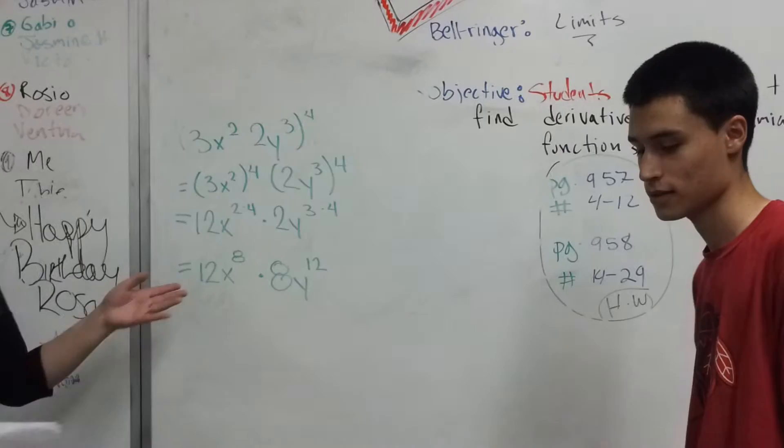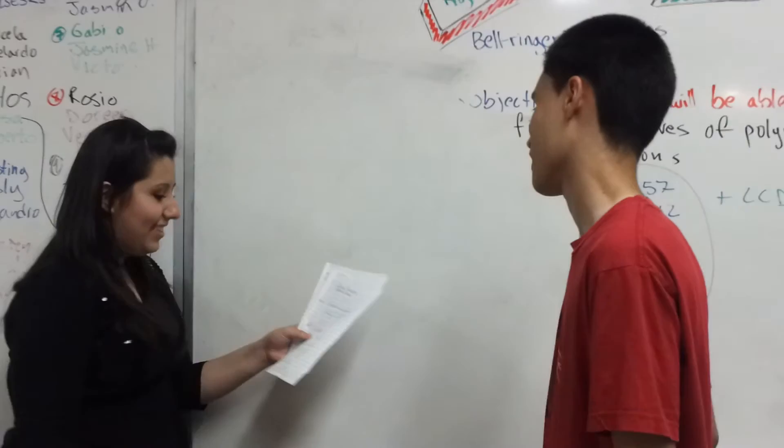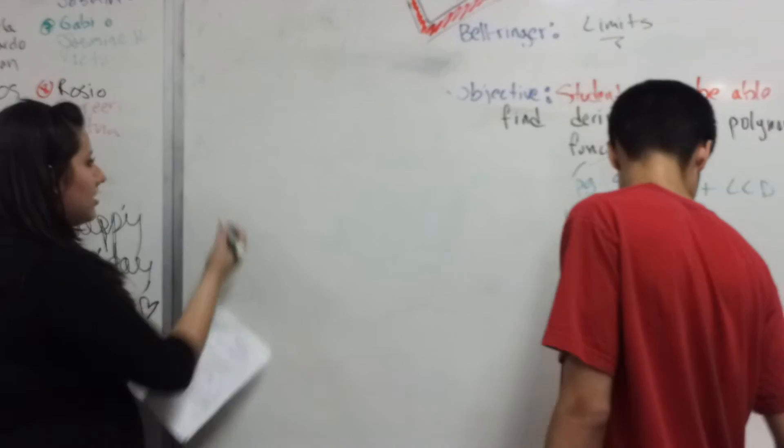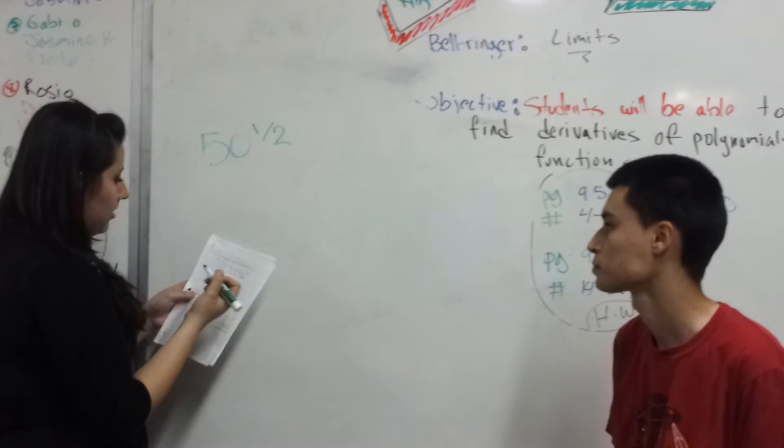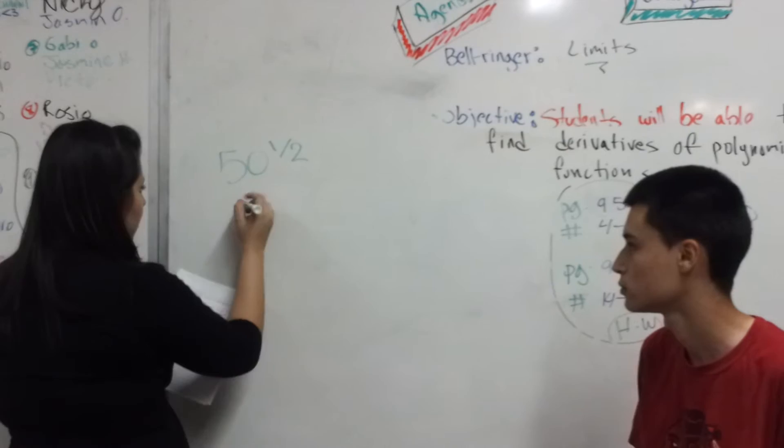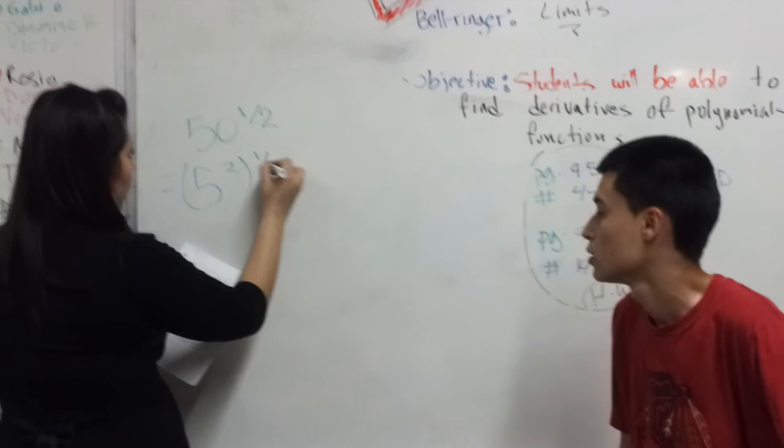Okay, so the third example: we could evaluate its expression. So if it's 15 to the half, we have to rewrite this as 5 squared, so it equals 5 squared, parentheses and then half, which equals to 5.